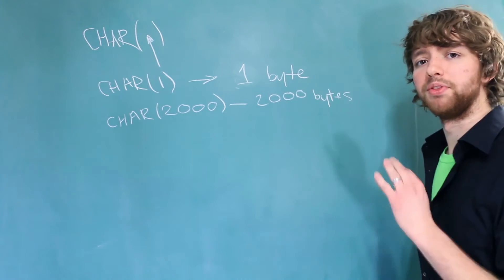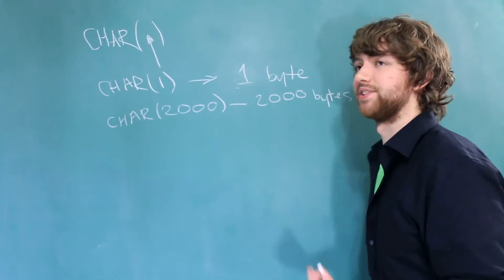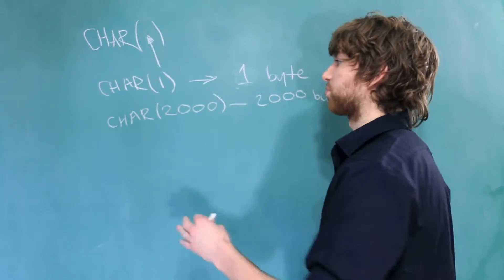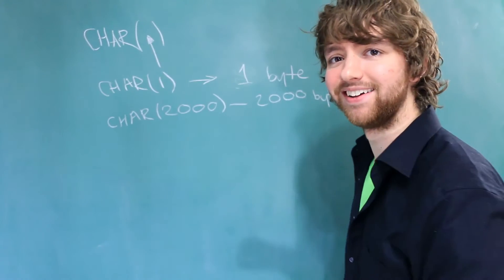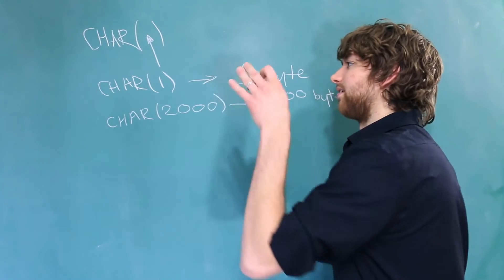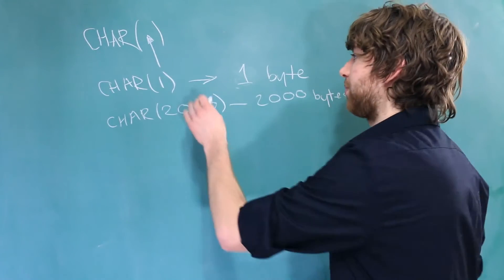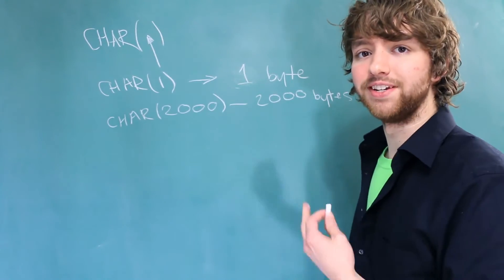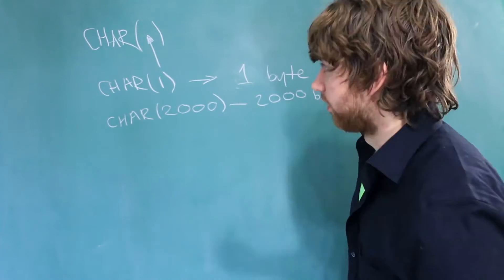That seems pretty simple, but there's a reason I thought it would be good to separate this into its own video, because unfortunately it's not that simple. Yes, these are the values you can use — anywhere from 1 to 2,000 — but using these values can introduce new errors.